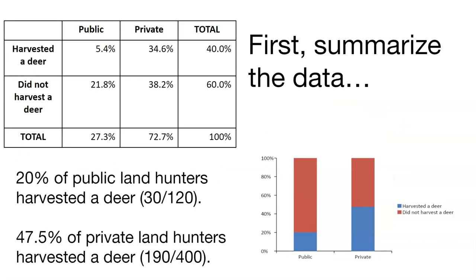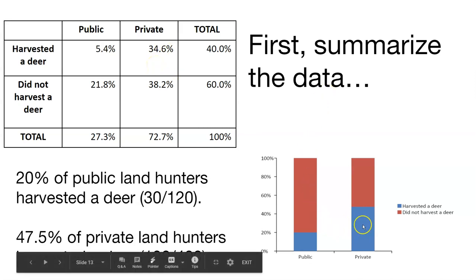What we first want to do is go back to the data and just calculate some simple summary statistics from it. We can calculate everything as percentages. We can say from our data set, 5.4% of public land hunters harvested a deer. 34.6% of all deer hunters got a deer on private lands. And we might be able to summarize that in the graph that we see here.